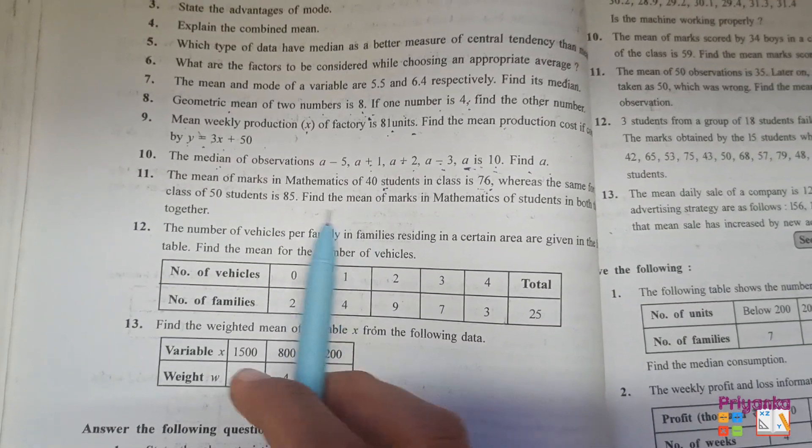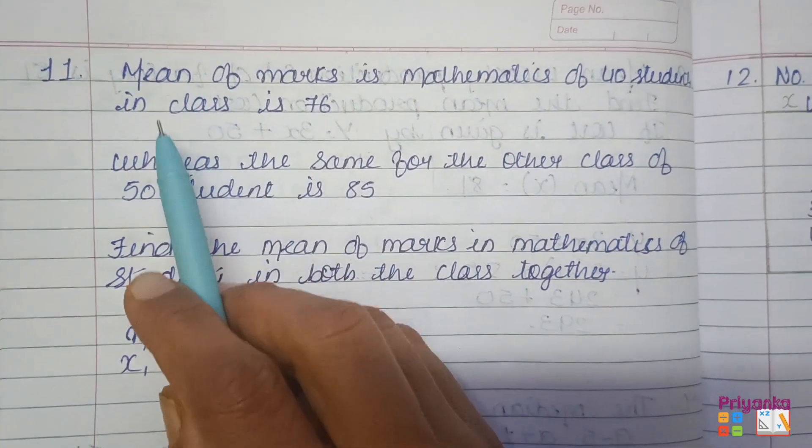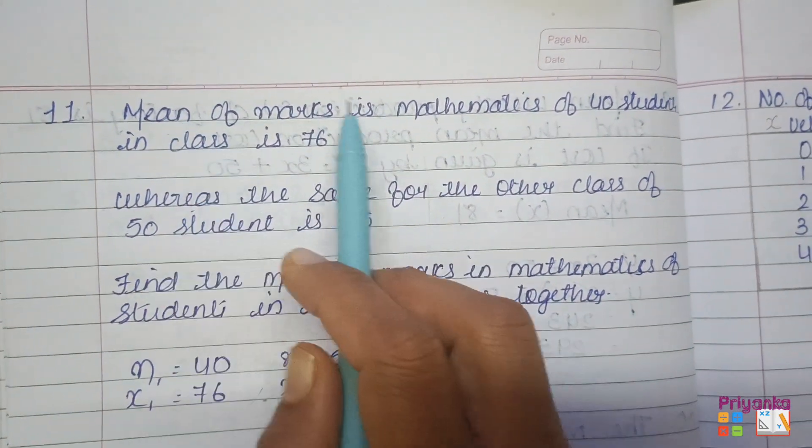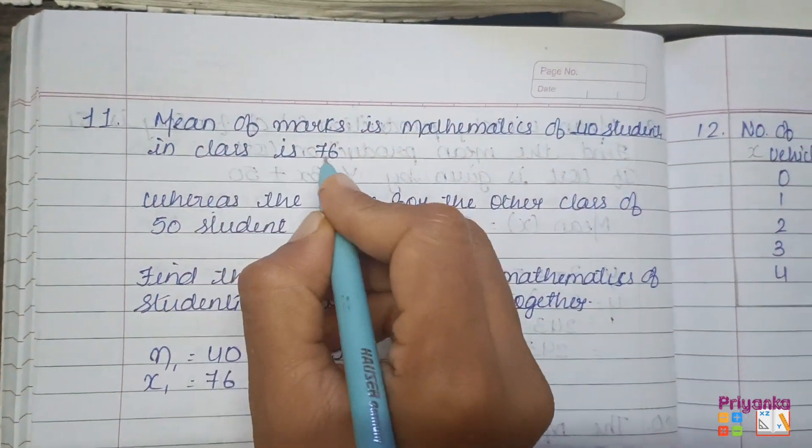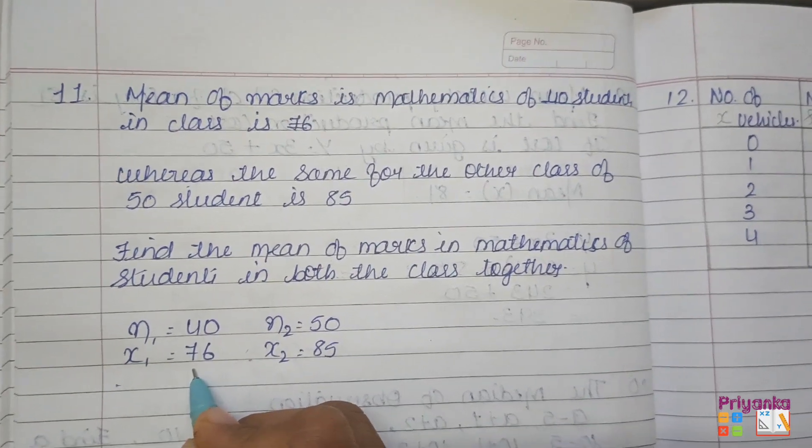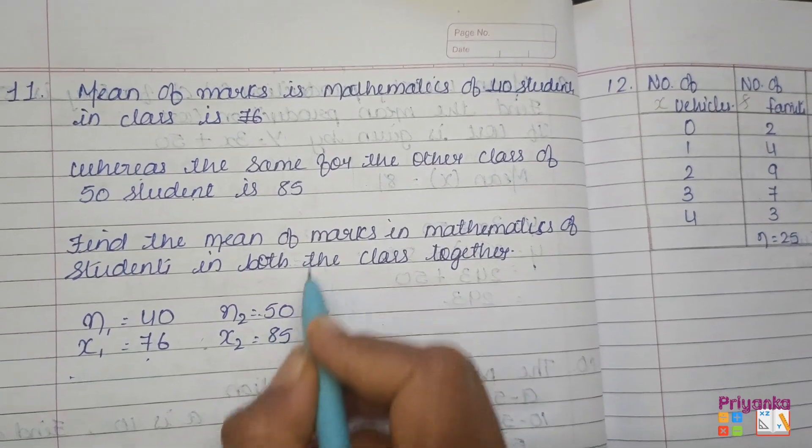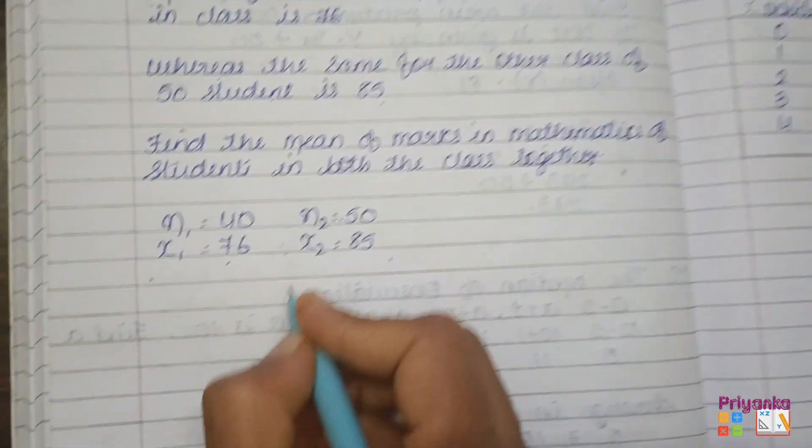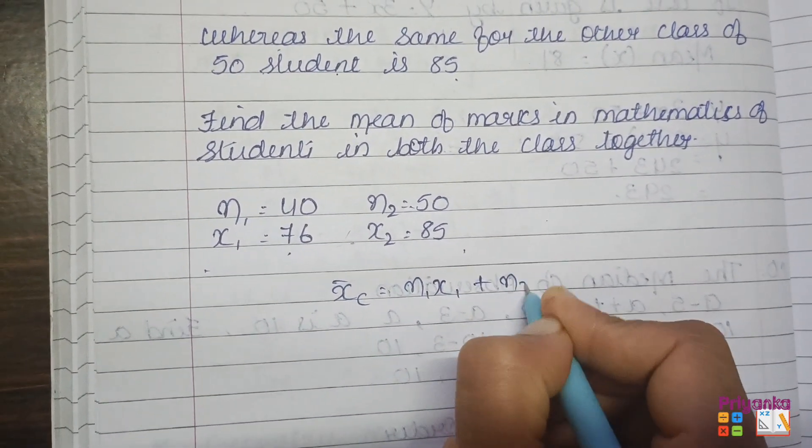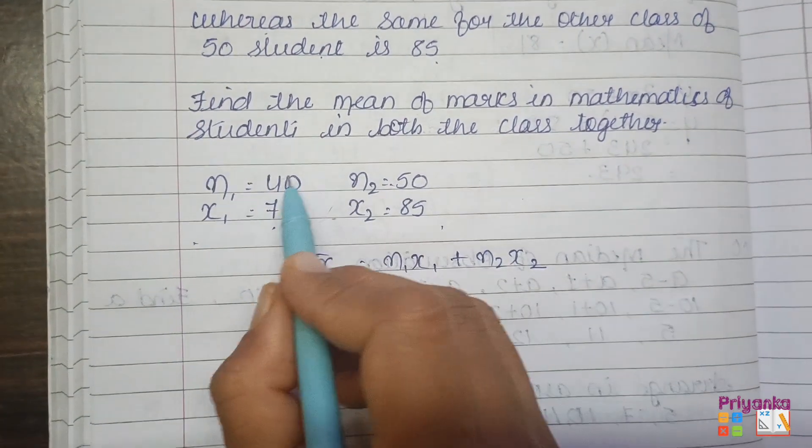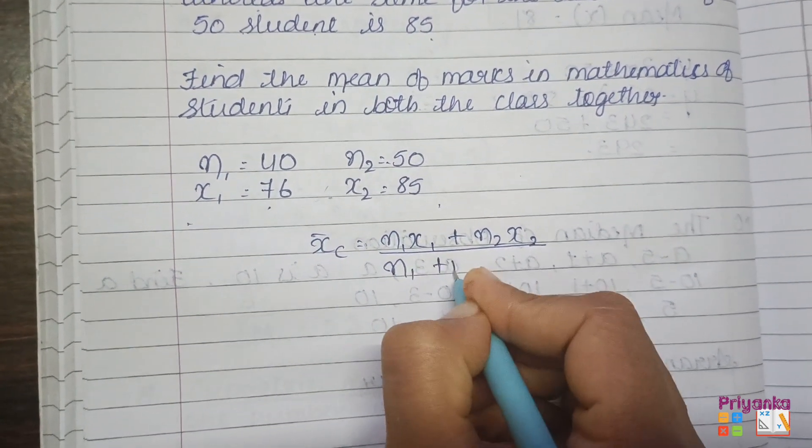For further explanation, I'll make it separate. The information given in the question: mean marks of mathematics for 40 students, which will be denoted as n1, and the mean will be 76, that is mean 1. Whereas the same for the other class for 50 students, which will be denoted as n2, and 85 as mean 2. We will keep the combined mean formula: n1 mean 1 plus n2 mean 2, as we have only two information. The denominator is n1 plus n2.